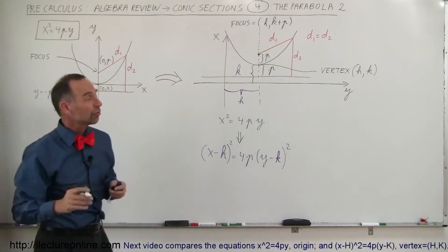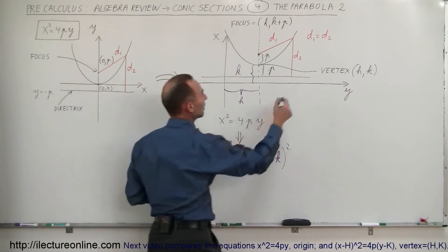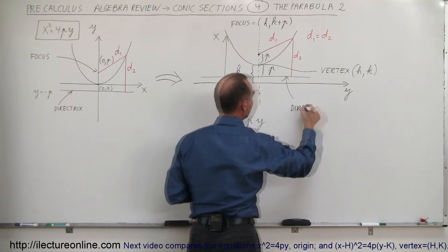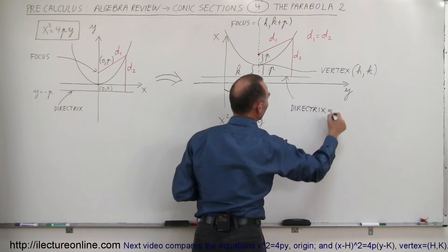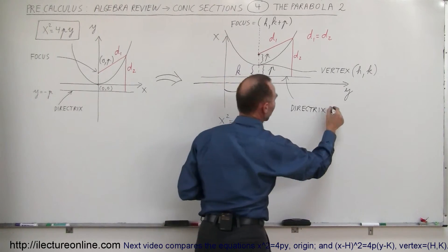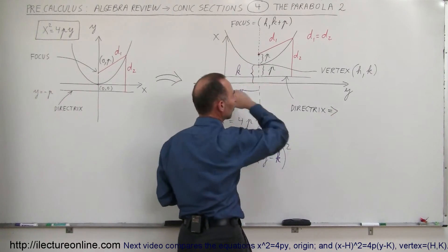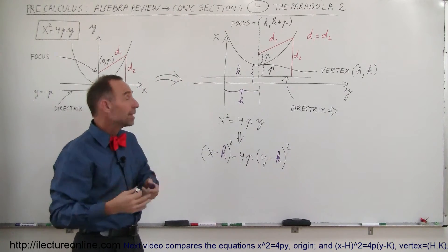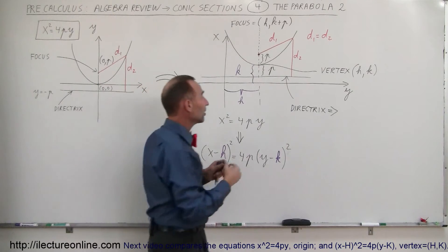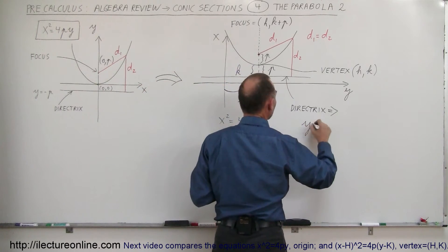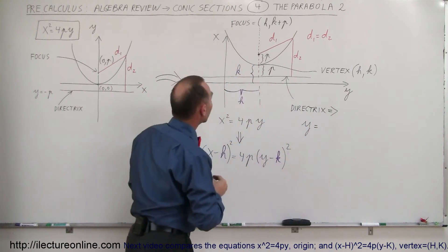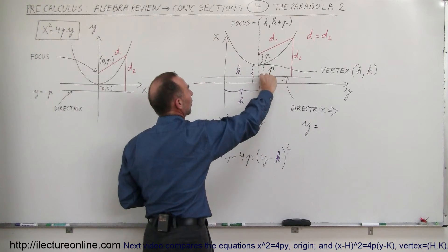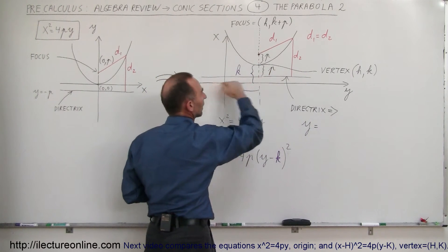And what would be the equation of the directrix? So that would be this line right here. The directrix is equal to, well actually we're going to set up an equation, because it's a line that is horizontal, which means that the y value is going to be a constant. So what would be the y value in this case? Well, we can say that y is equal to, now let's see here, the directrix is this far above the y...